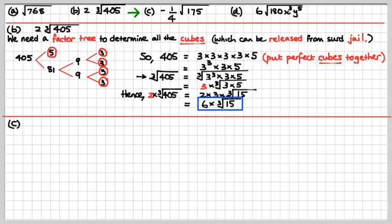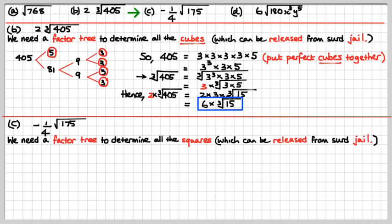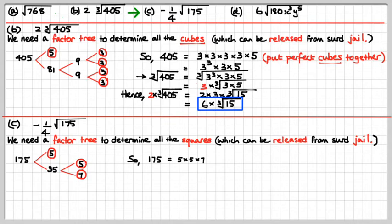We'd better do the third one now: minus a quarter of the square root of 175. We need to do a factor tree on that 175. That's ending in 5, so we'll divide by 5: 5 times 35. Circle the 5, because it's a prime number. And 35 is 5 times 7, and both of those are prime numbers — we've hit the end of the line. That was a short one. So 175 is 5 times 5 times 7.